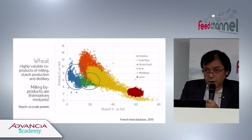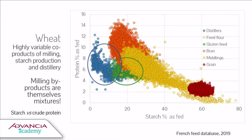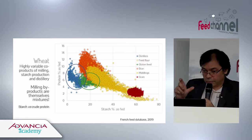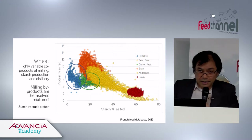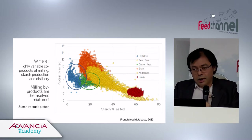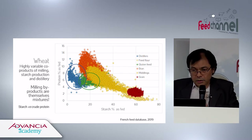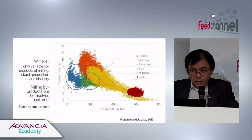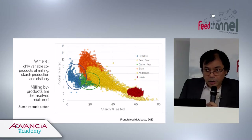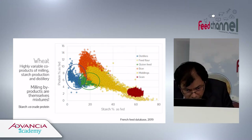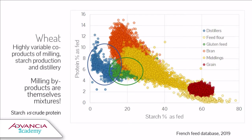The same applies to wheat. The wheat grain itself is variable, but much less so than its by-products. The large cluster in the middle represents the middlings, shorts, bran, and feed flour — driven by starch extraction. The variation for middlings alone is about 20 to 60% protein, and it is a continuum — there is no clear boundary between bran and middlings.